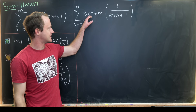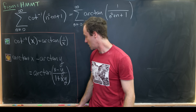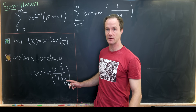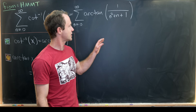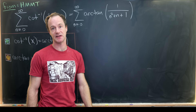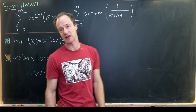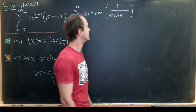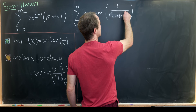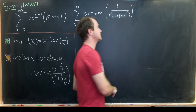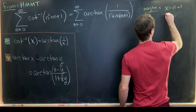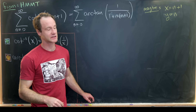We'd like to write arctan of 1 over (n squared plus n plus 1) in the form of the right-hand side of our difference formula, hoping to get a telescoping series. We notice we already have a 1 plus something in the denominator: 1 plus n squared plus n, and n squared plus n factors as n times (n plus 1). So we re-envision the denominator as 1 plus n times (n plus 1), which suggests setting x equal to n plus 1 and y equal to n.